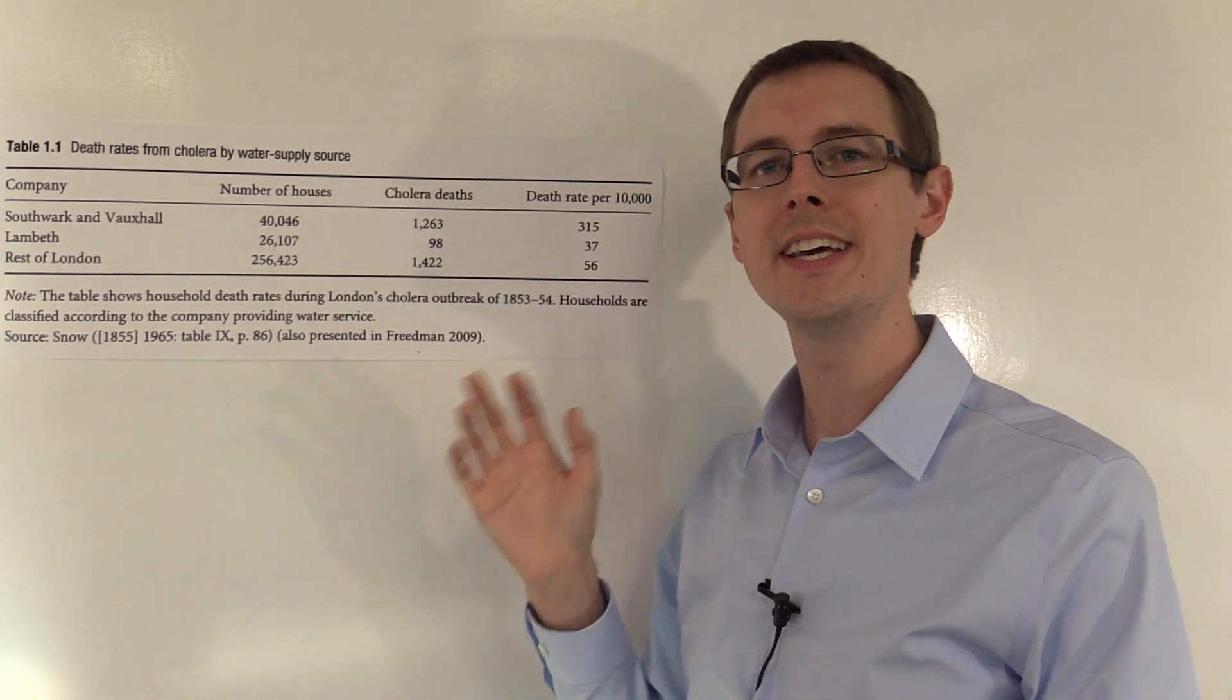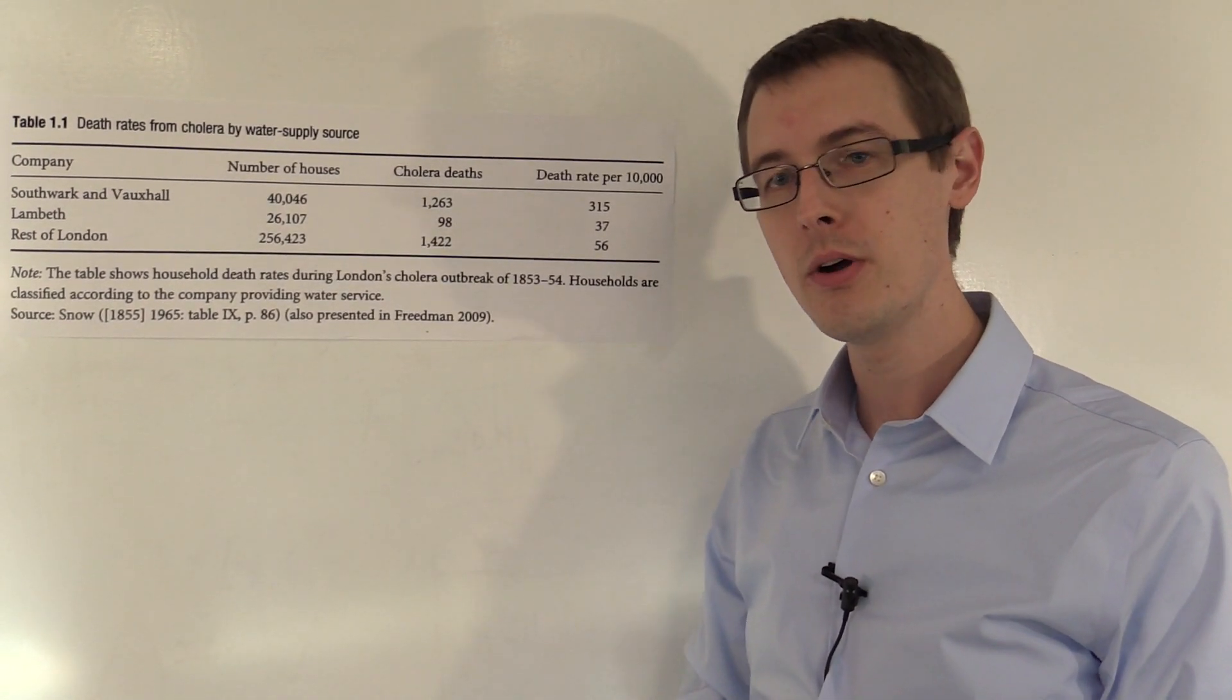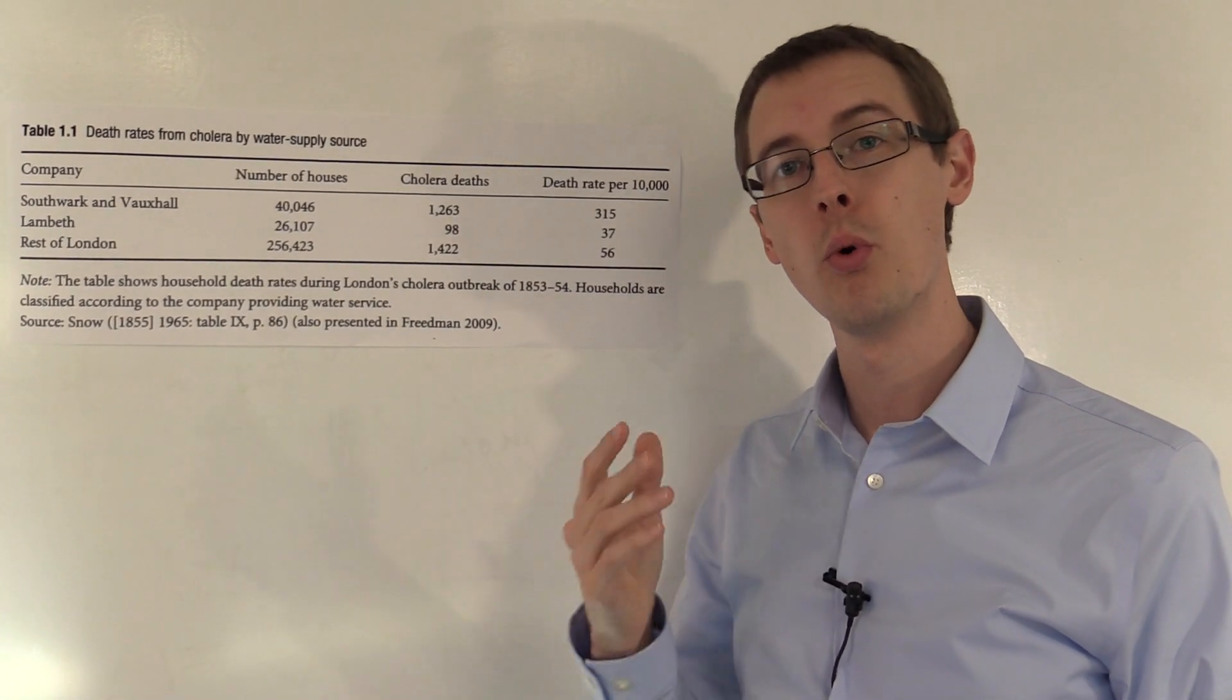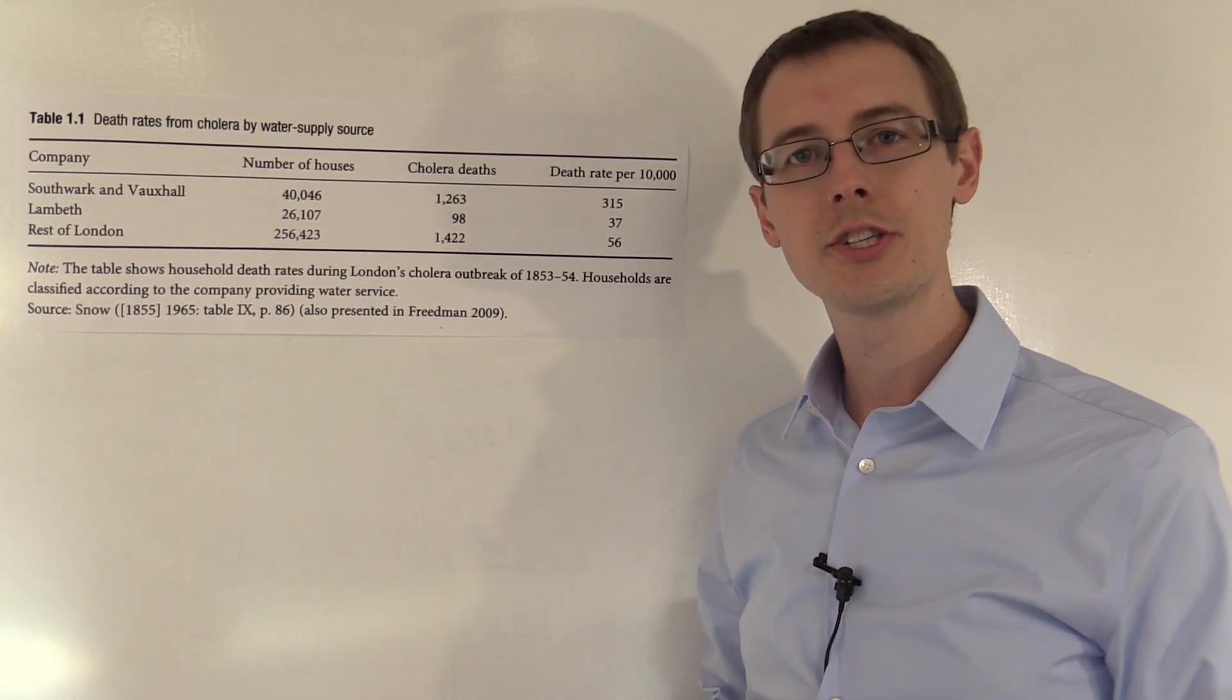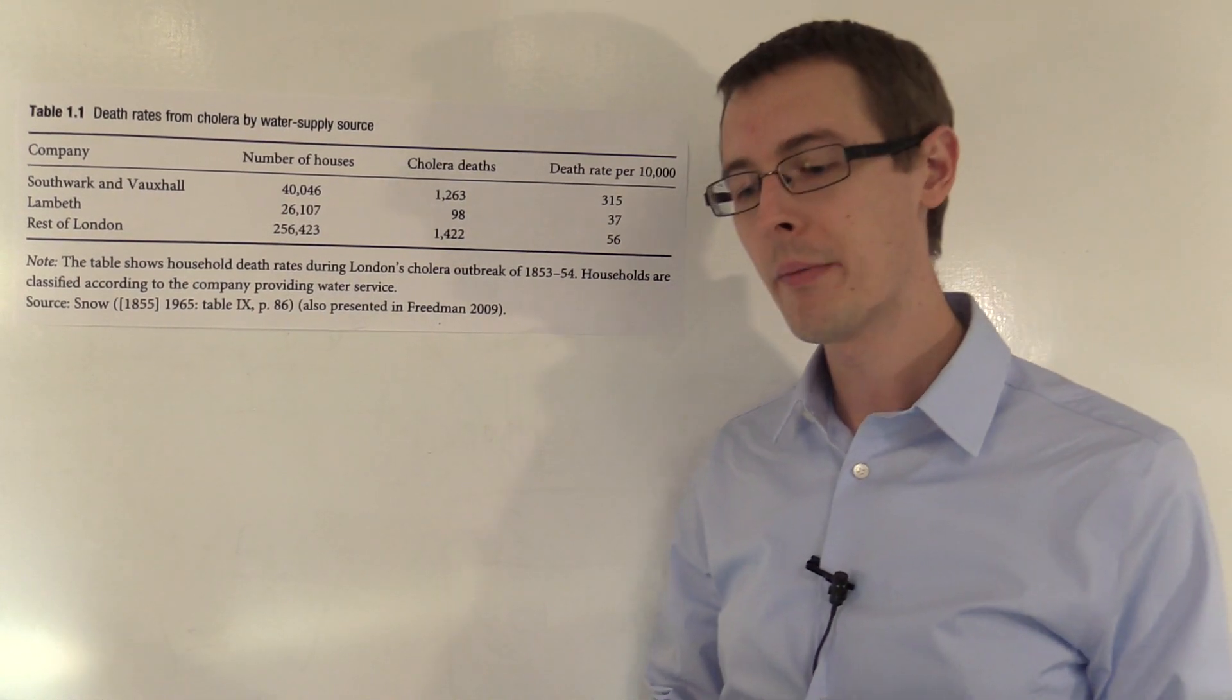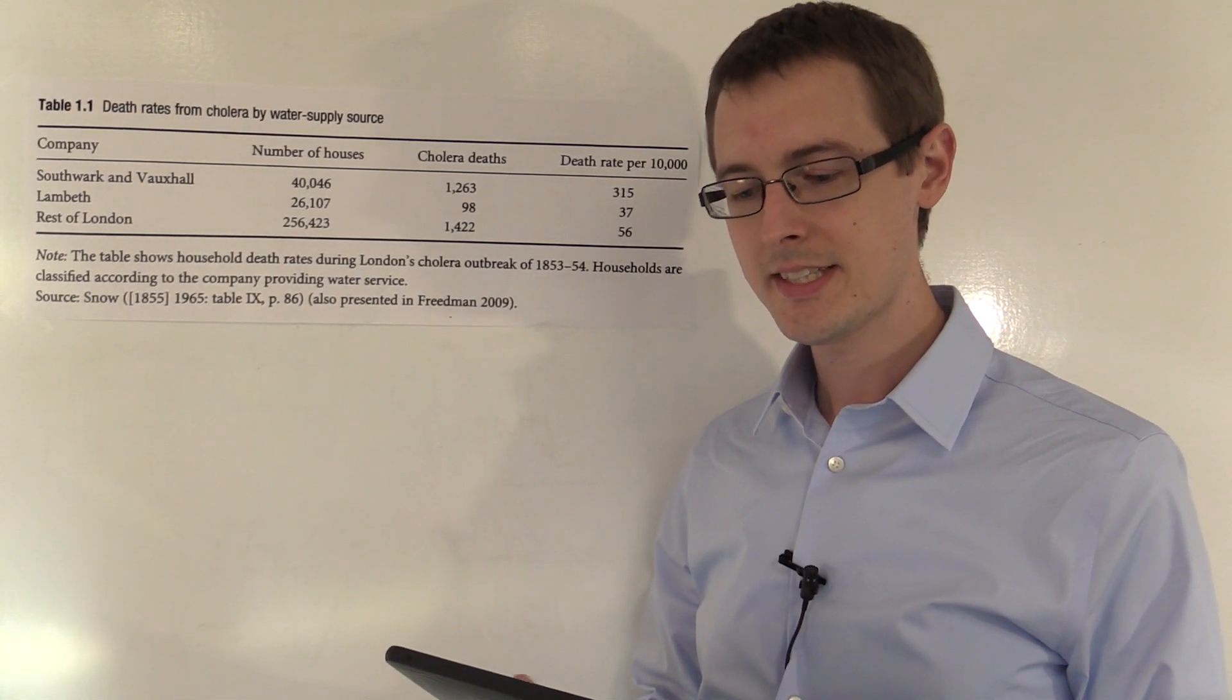All we have to do is figure out, is the as-if randomization assumption true? Do we really believe that? If so, then this conclusion that it's the water that's spreading cholera is valid. So, how did John Snow justify this? Well, I'm going to read a quote because it's really amazing what he said.